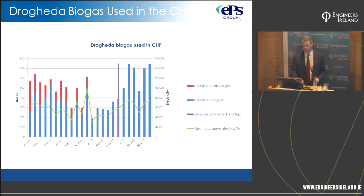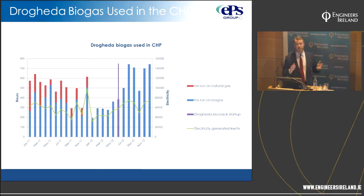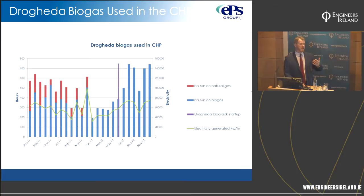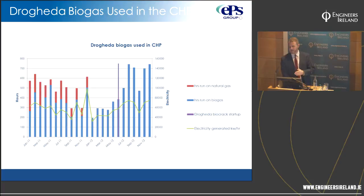Drogheda is the extremely significant one — we don't use natural gas on that site anymore. This comes back to the hydrolysis stage. The biodegradability of those cell walls is so significant. Drogheda had a 14-day sludge retention time during these trials; Dundalk was closer to 30 days due to volume. At 30 days, the process completes regardless of whether you improve it. But on a tighter 14-day timescale, the process hasn't completed fully, and BioCrack encourages it to do so — which is why you see the significant difference at Drogheda.